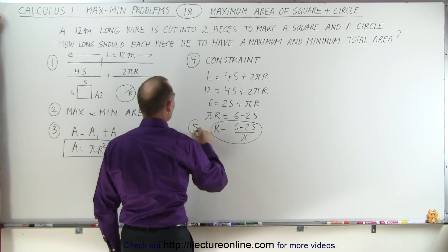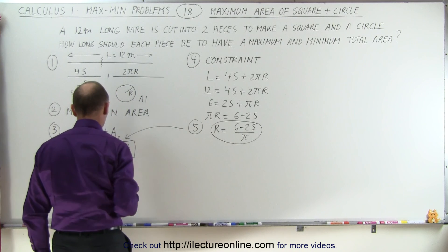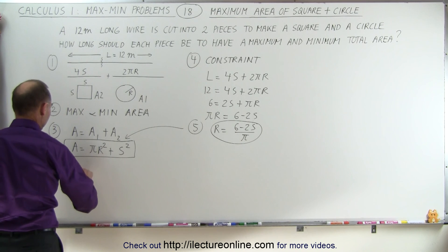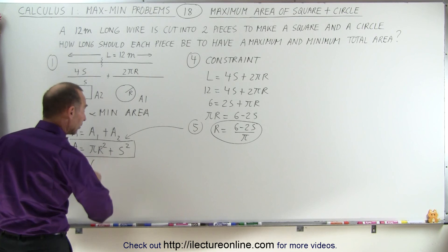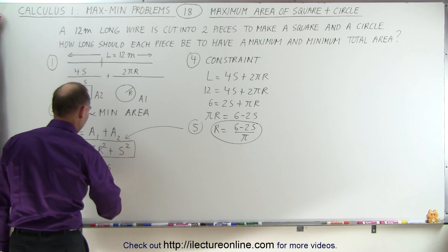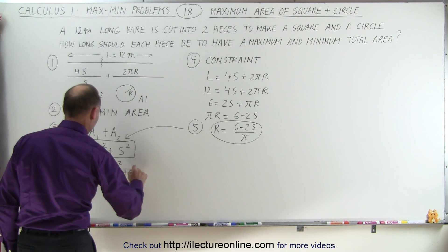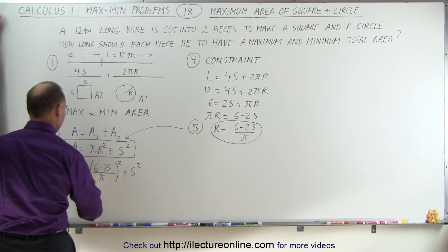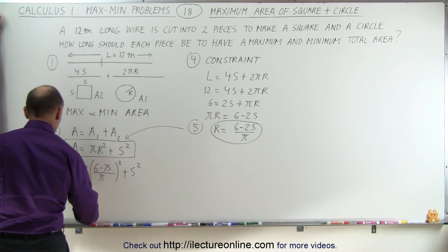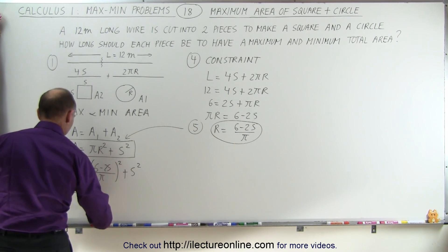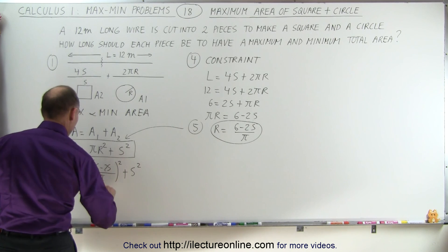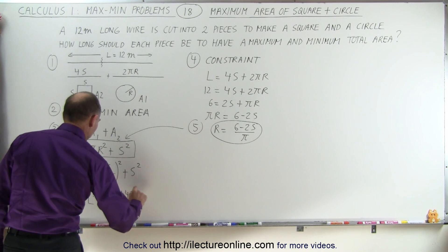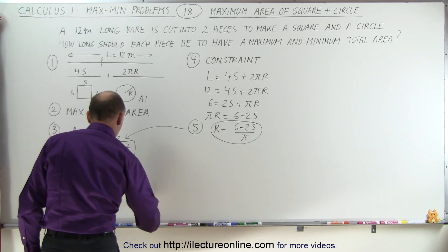Step 5: we take that relationship and plug it back into our equation. The area equals π times r², which is π times [(6 − 2s)/π]², plus s². Working this out, the π and 1/π² simplify to give area = (1/π)(36 − 24s + 4s²) + s².